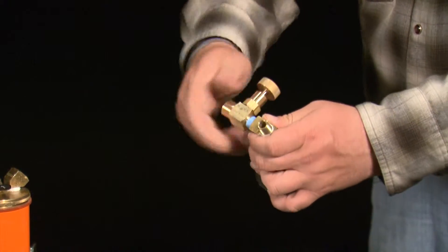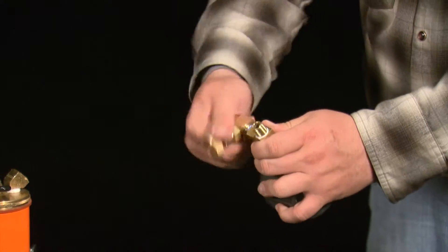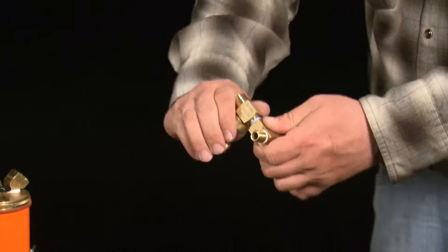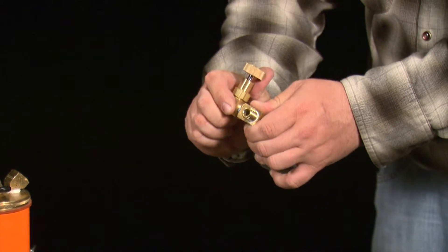Screw the new needle valve onto the brass elbow where the pop valve used to be. Make it sit at a 90 degree angle to the elbow and gauge and fit snugly.